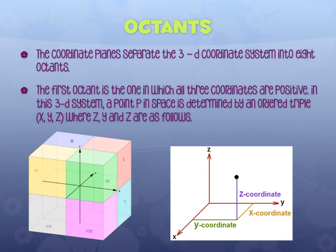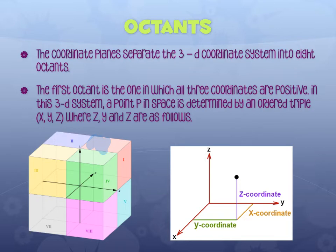The coordinate planes separate the three-dimensional coordinate system into eight regions called octants. Instead of four quadrants, there are eight octants. Picture a Rubik's cube divided through the center on all sides — it divides into eight little cubes, and those are the octants. You won't need to label which octant a point is in; it's just a vocabulary term you might see.